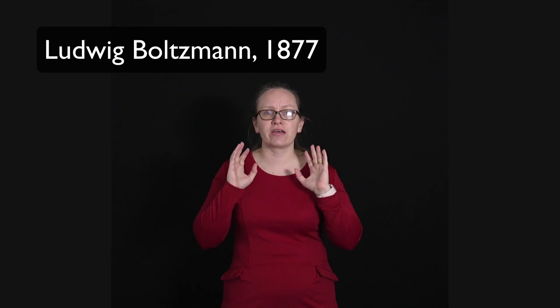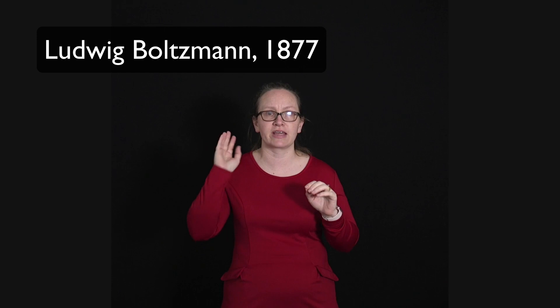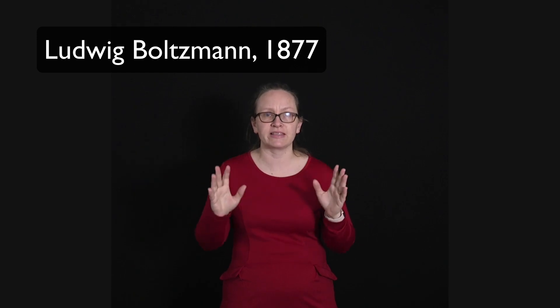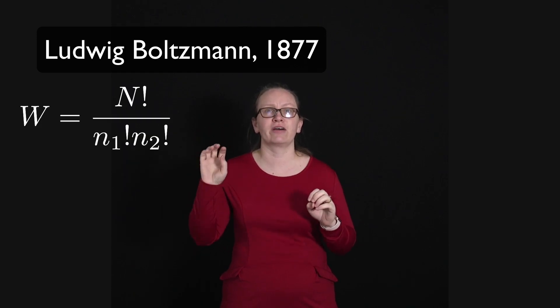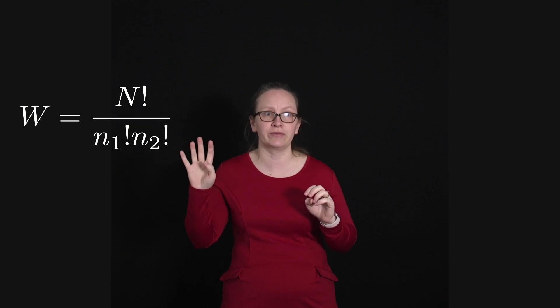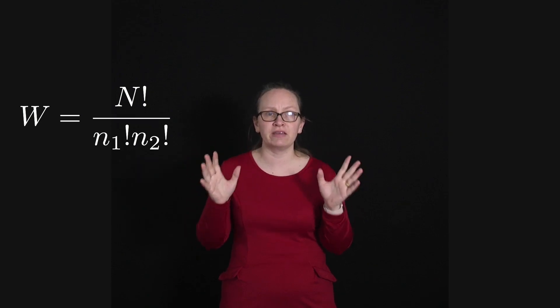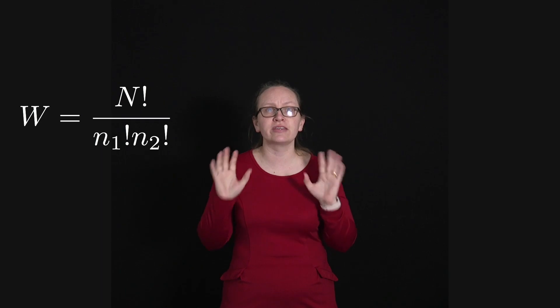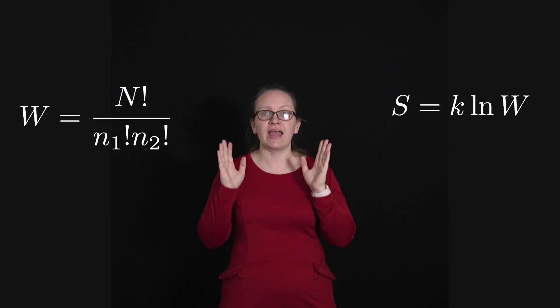Now you know how to count the number of microstates and relate this to the probability of a configuration. In 1877 Ludwig Boltzmann found a relationship between the multiplicity of configurations, our W, which we said was N factorial divided by n1 factorial times n2 factorial, and the entropy of a system. He showed that they were related through S equals k log W.